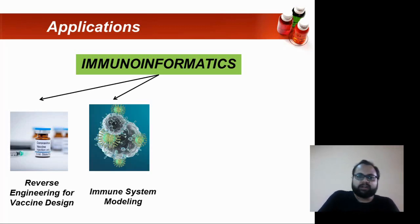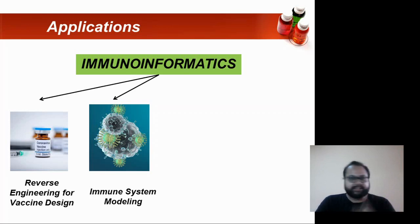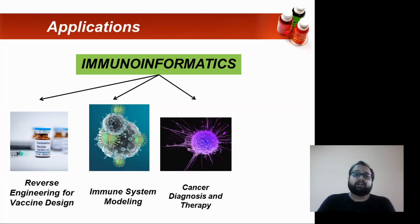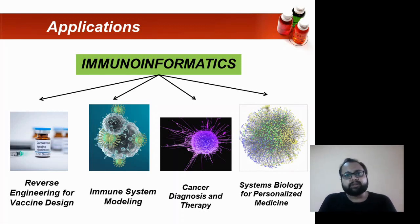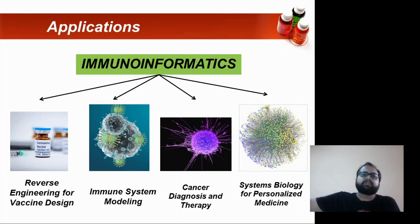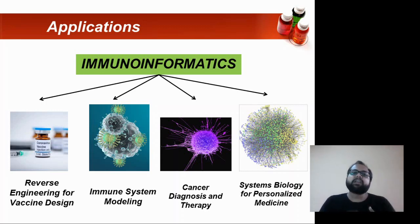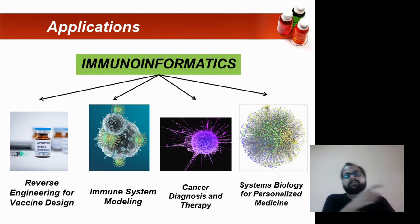The next application is immune system modeling — that is modeling of proteins for your antigen and antibodies. Third, immunoinformatics plays a big role in cancer diagnosis and therapy. Finally, there is the systems biology approach, where you understand protein-protein interactions and antigen-antibody interactions. Using these interactions, you can develop personalized medicine by studying protein-drug interactions and identifying various biomarkers.